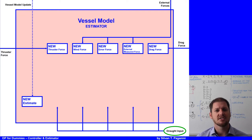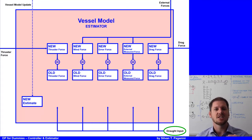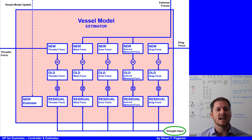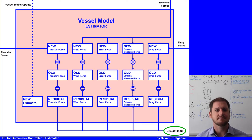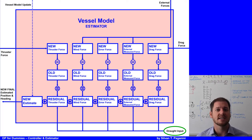One calculated cycle is normally one second. Every second, the new thruster force, wind force, aero force, external measured force, and drag force come in. The old data — just one second old — is deducted from the new data, leaving the residual force that changed in the last second. These residuals are then added to the estimate from the Kalman filter, giving the new final estimate for that second, which is used for the next calculation cycle.